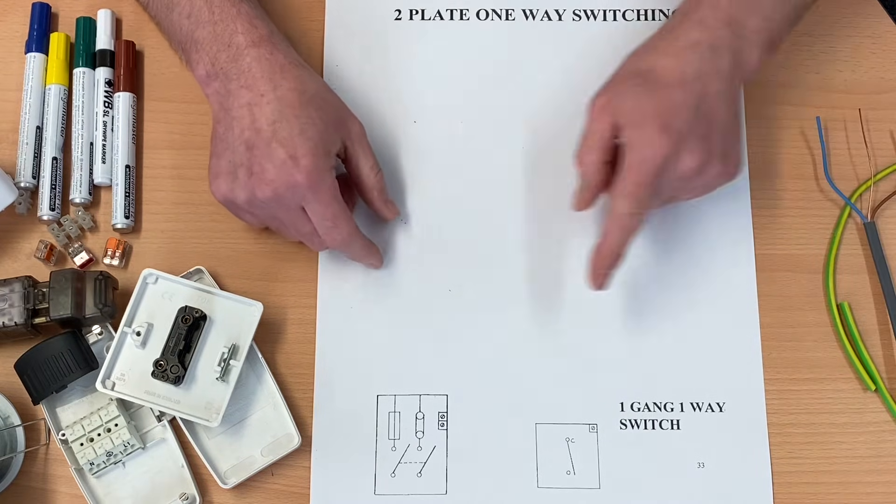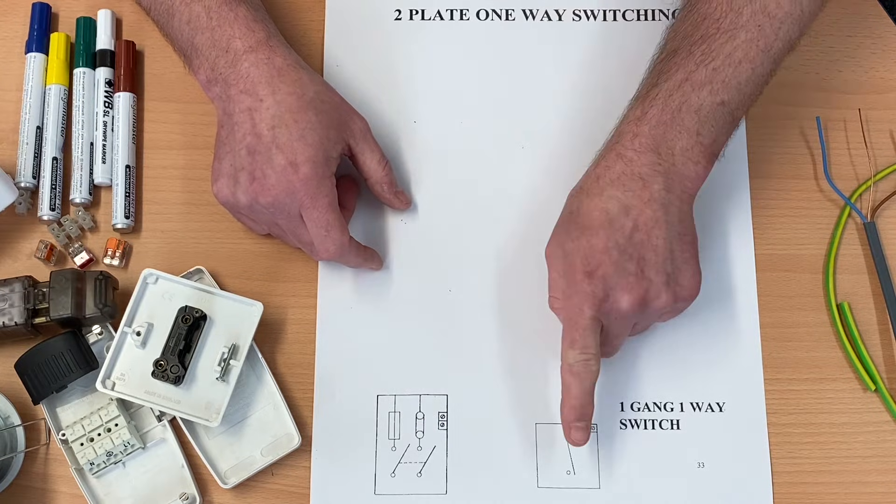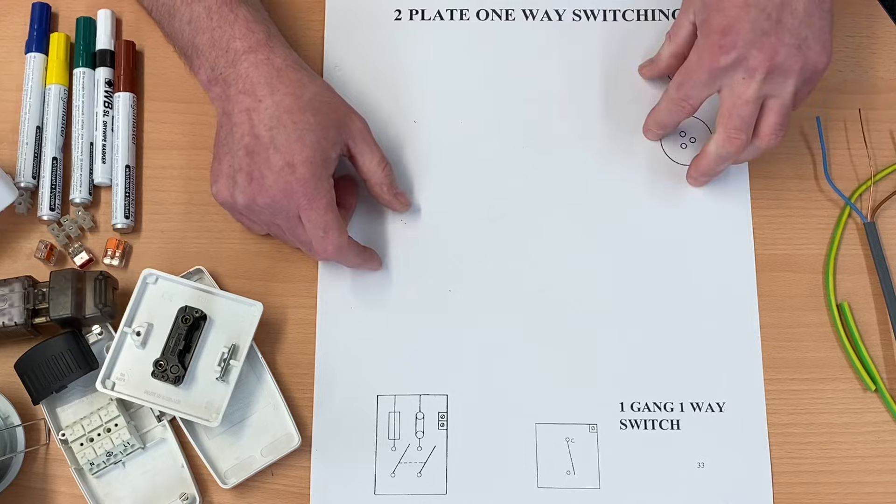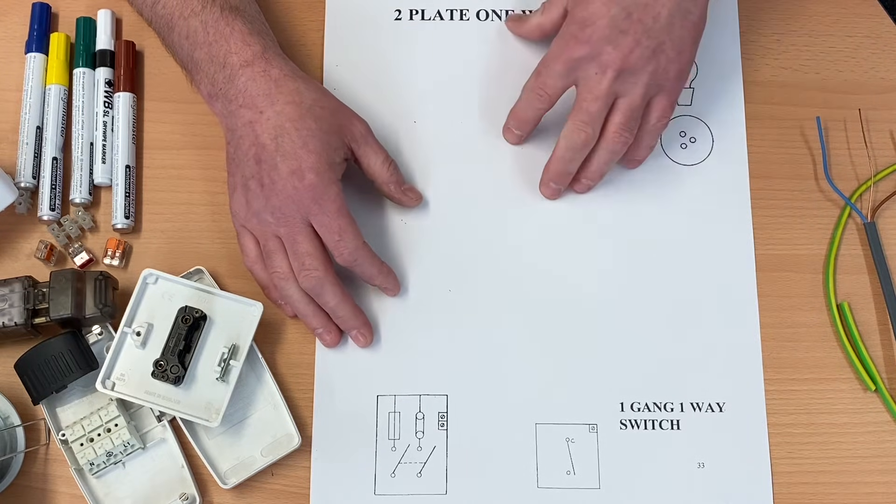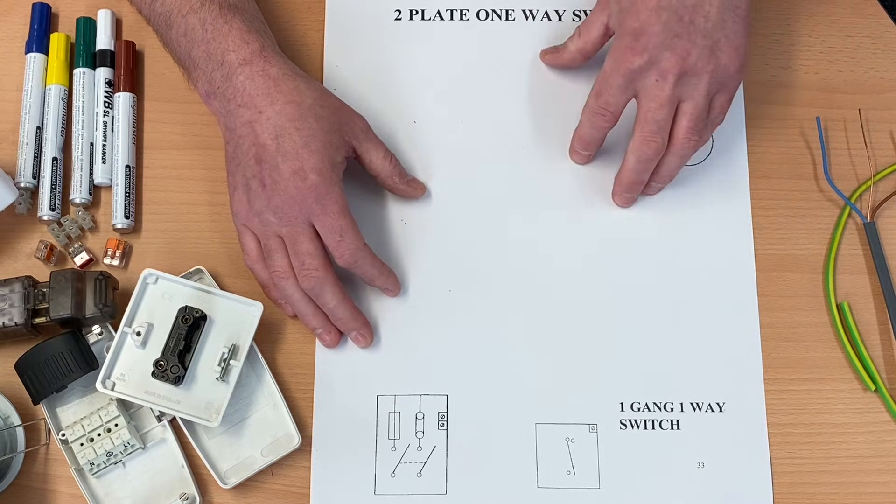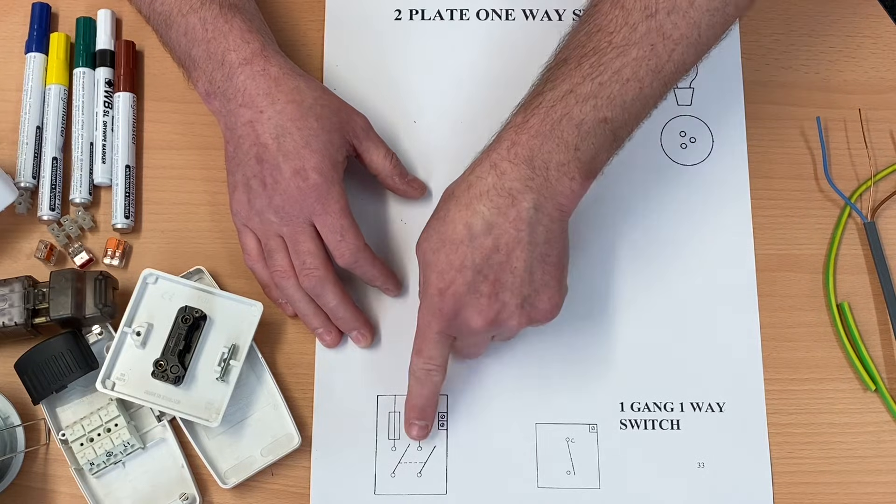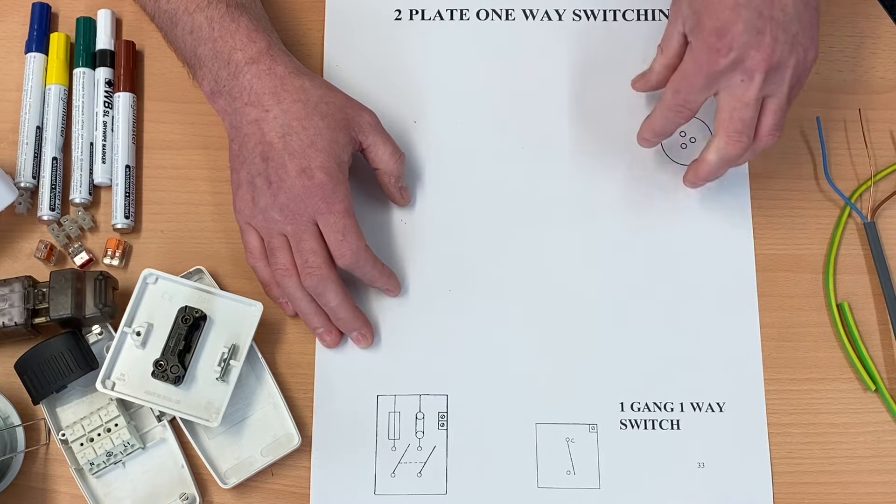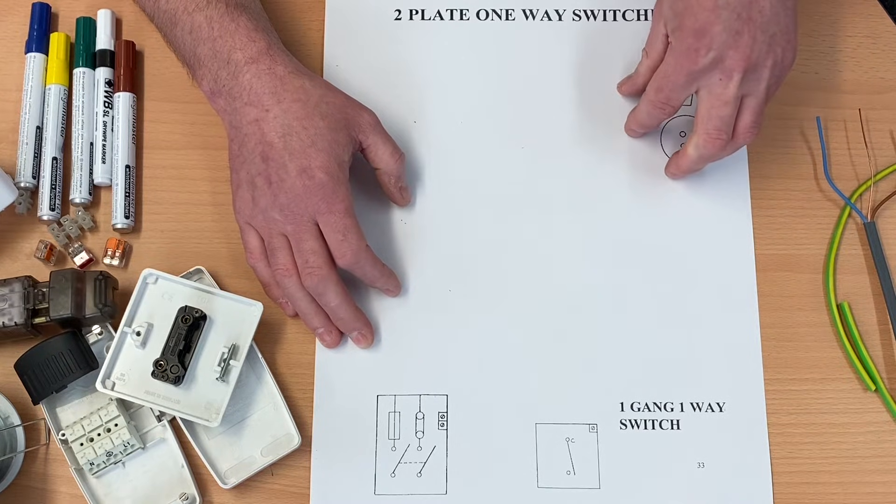So it's going to require us to take the supply in this case from the consumer unit directly to the switch, and then from the switch up to the lighting point itself. This is often used in industry, where there's loads of down lighters, say in a kitchen area. The electrician will bring the supply directly to the switch, and then from the switch to the lighting point itself, it cuts down the number of cables at the lighting point.